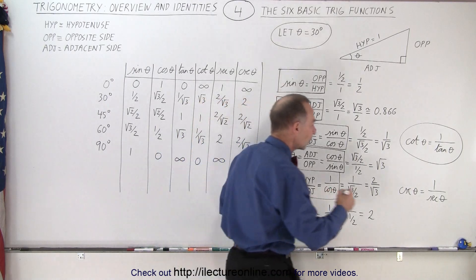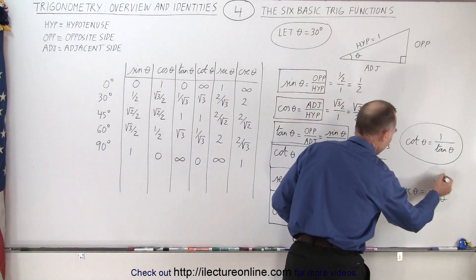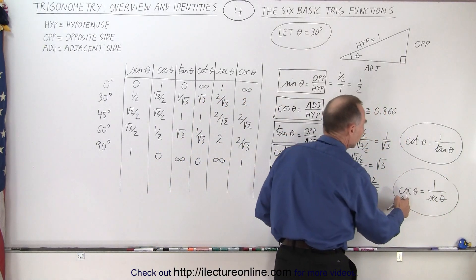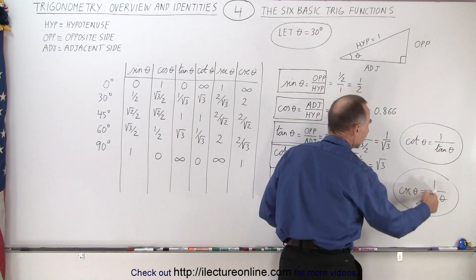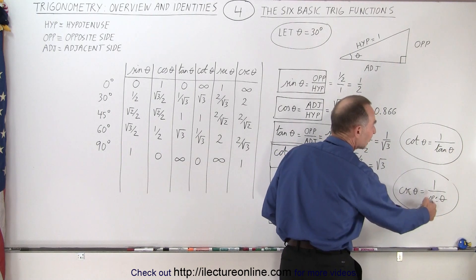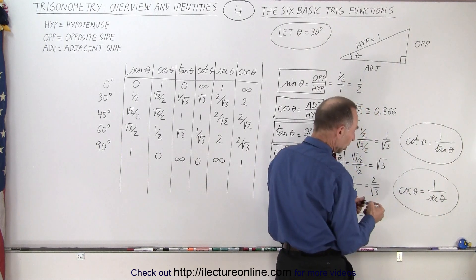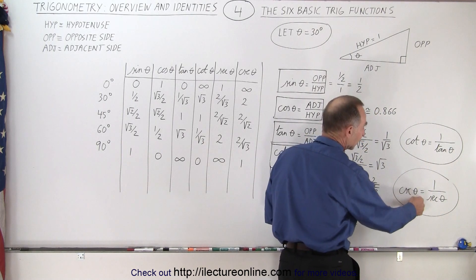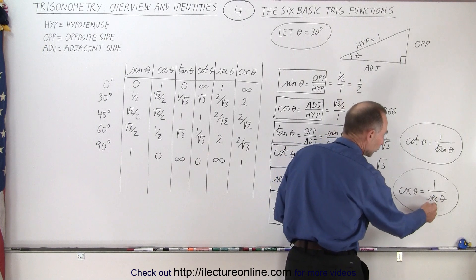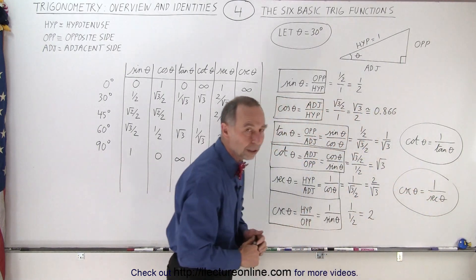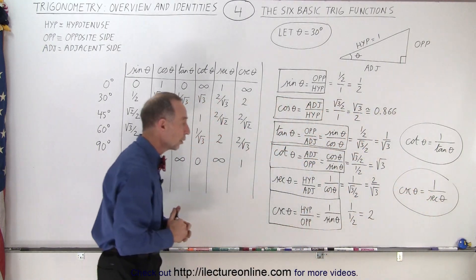There's a relationship between the cosecant and the secant: the cosecant is 1 over the secant, so one is the inverse of the other. You can also say that the secant is equal to 1 over the cosecant.